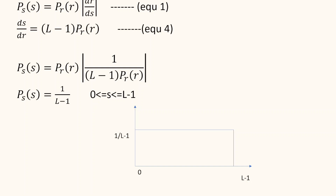You can see the flattened histogram given here in the figure. This concludes that any image can be transformed to produce a flattened histogram to increase the quality of the image. That is all with histogram equalization. Thank you.